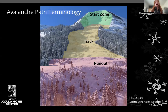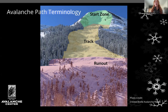Some basic path terminology. We have our start zone, our track, and our runout. Our start zone is where avalanches often start. Our track is really the meat of the avalanche path. And the runout is where the avalanche debris in a large avalanche ends up. It's nice and simple in this photo — a big, clearly defined avalanche path — but we're not always in terrain like that.